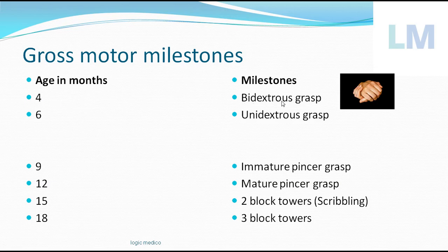At four months of age, the child achieves bidextrous grasp — meaning it uses two hands to grasp an object. When you place a toy in the cradle, the child stretches both upper limbs and catches the toy with two hands. 'Bi' means two, so the mnemonic is two times two equals four — bidextrous grasp at four months.